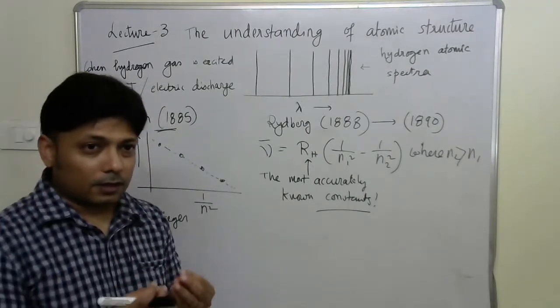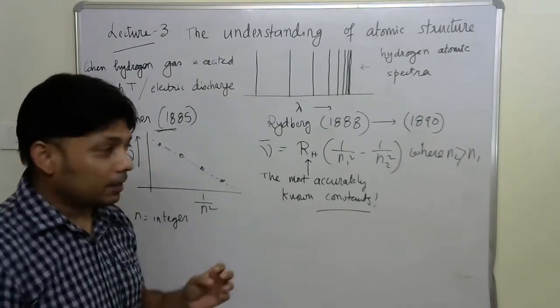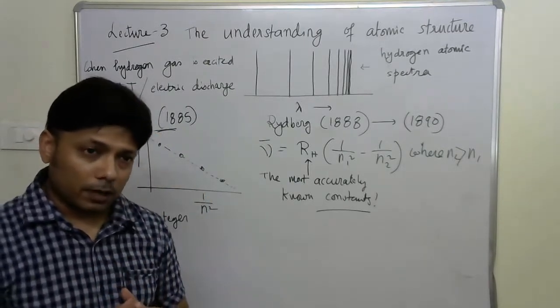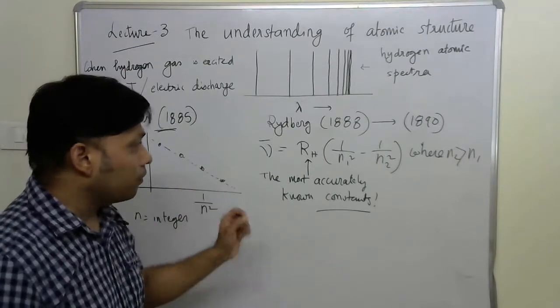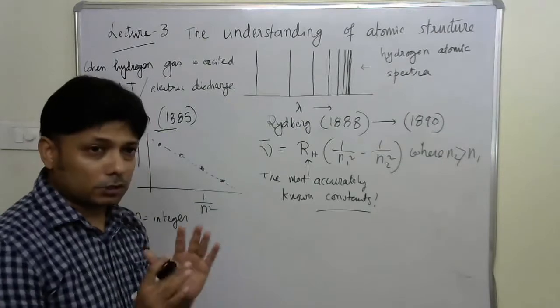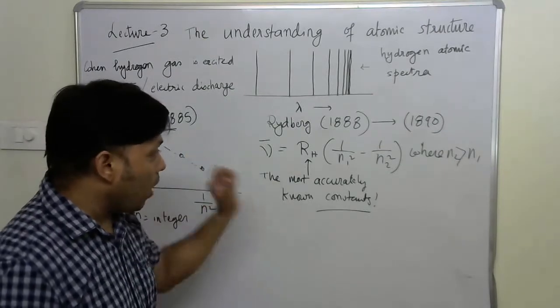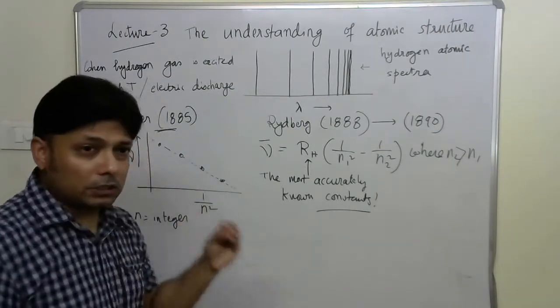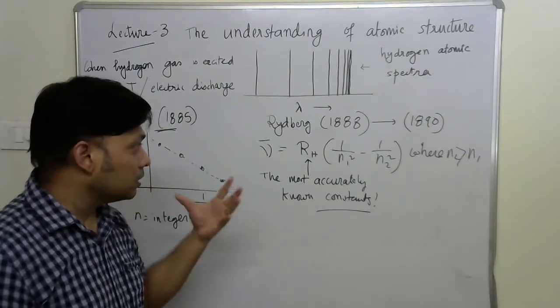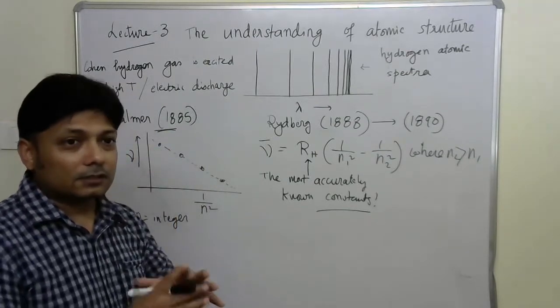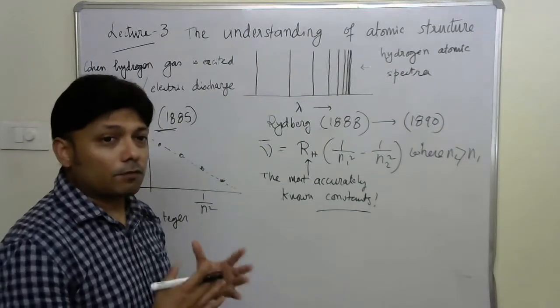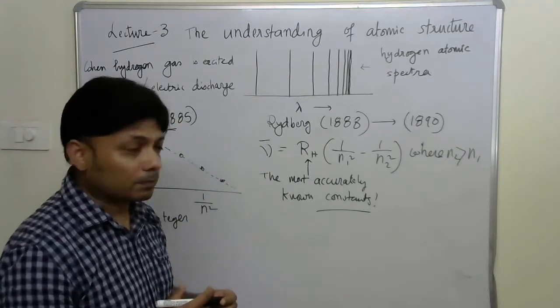But from all this discussion, one thing is clearly evident that whenever we talk about an atomic phenomenon, the role of the integers here, n1 and n2 are all integers, means non-zero positive value, positive integers: 1, 2, 3, 4, 5, 6, 7. The role of integers become extremely important. The integers dictate whatever the spectrum phenomena we see from the atoms.